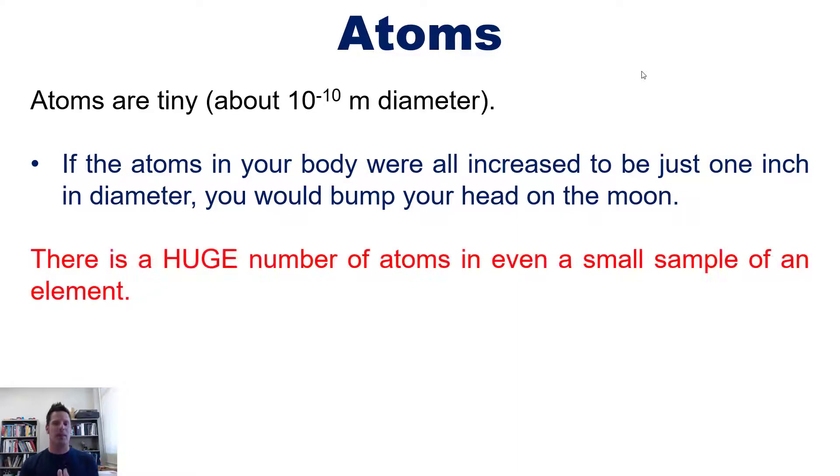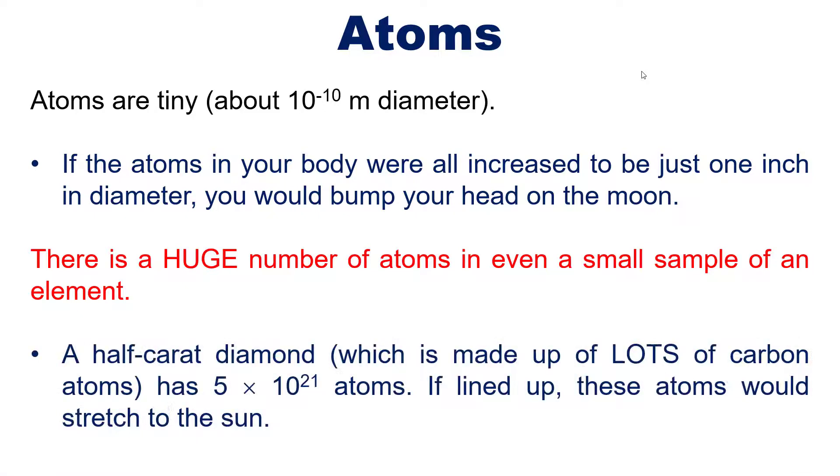Because of their tiny size, there is a huge number of atoms in even just a small sample of an element. For example, a half-carat diamond, which is made up of lots of carbon atoms, has about 5×10^21 atoms. That is a large, large number - it's 5 with a ton of zeros to the right of it, unfathomably large. If you lined up all of these 5×10^21 atoms in a line without changing their size in any way, all of these individual atoms would form a line that would stretch all the way to the sun. That's how many atoms there are in a half-carat diamond - crazy, huh?